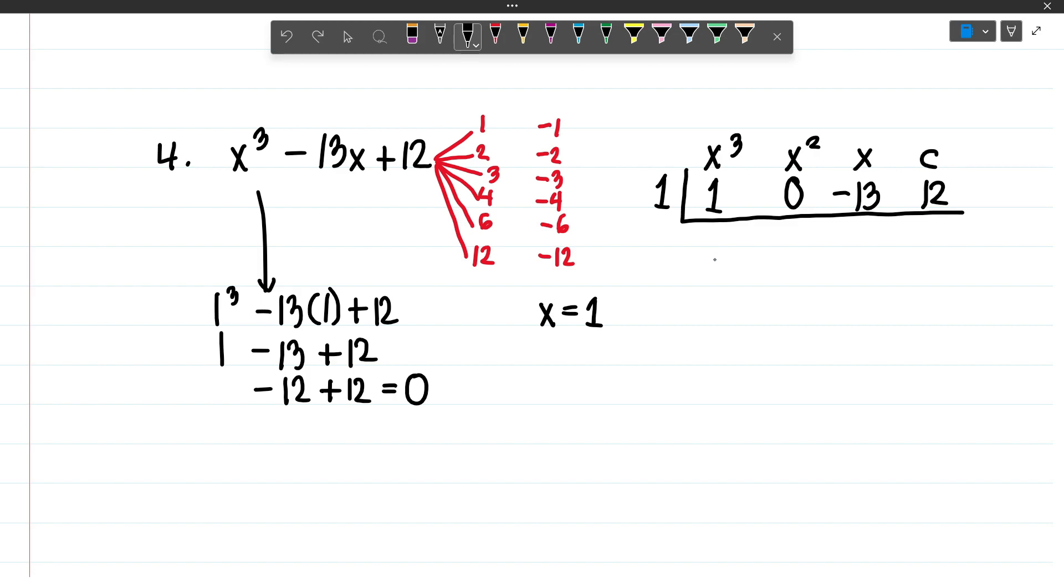The next step is to bring down 1, then we multiply this number by this number. So 1 times 1 equals positive 1. Then we add these numbers: 0 plus 1 equals 1. Now 1 times 1 equals 1. Negative 13 plus 1 equals negative 12. Negative 12 times 1 equals negative 12. 12 minus 12 equals 0.